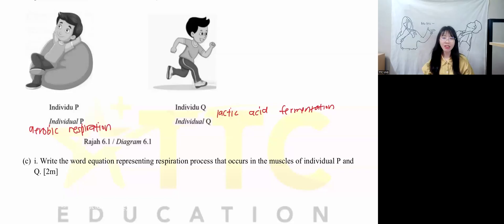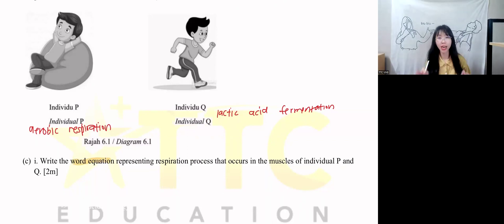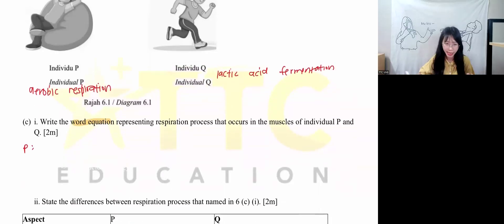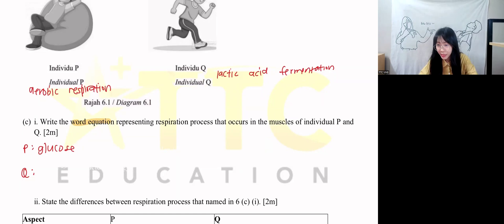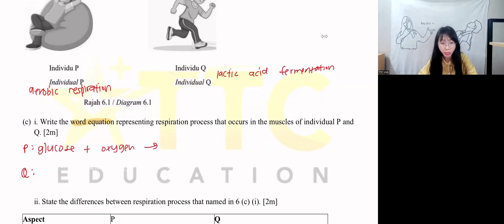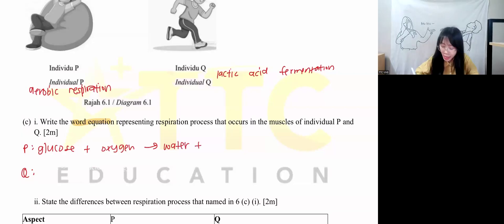Write the word equation representing the respiration process in the muscles of P and Q. Word equation means you cannot write CO2 or H2O — you must write the full words. For both aerobic and lactic acid fermentation, you start with glucose. For P (aerobic respiration), oxygen is needed, and the products are carbon dioxide, water, and energy.